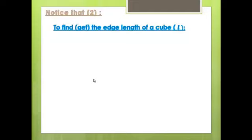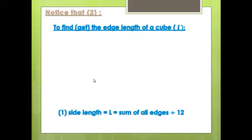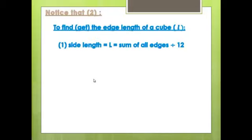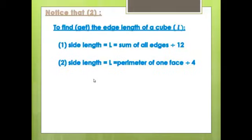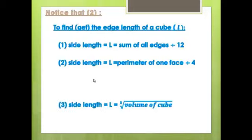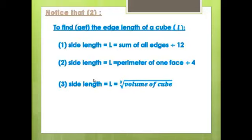Note 2: How to find the edge length L of a cube. There are three rules: Rule 1 — L = sum of all edges ÷ 12. Rule 2 — L = perimeter of one face ÷ 4. Rule 3 — L = cube root of the volume.